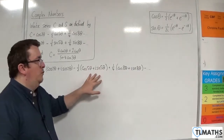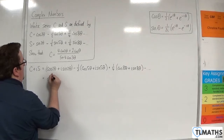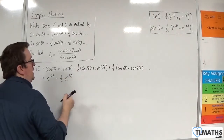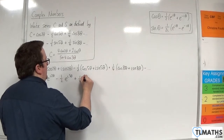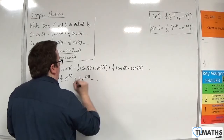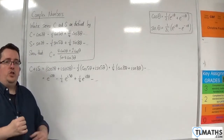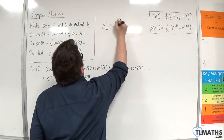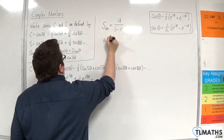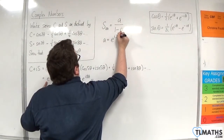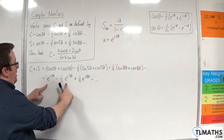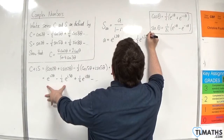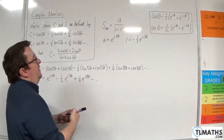Each of these we can rewrite in exponential form. So this is e^(i2θ), then we'll have take away one-half e^(i5θ), and then take away etc. So this is an infinite geometric series. We have the formula for infinite geometric series: S∞ = A over 1 minus R. In this case, we have A as e^(i2θ) and R — what I'm multiplying by each time — will be minus one-half e^(i3θ).